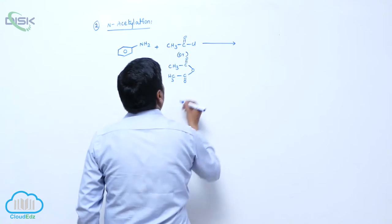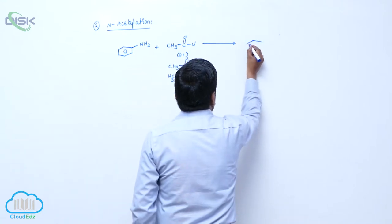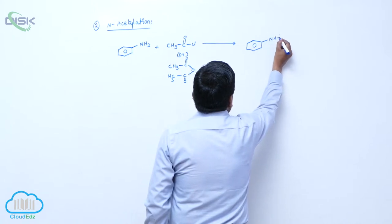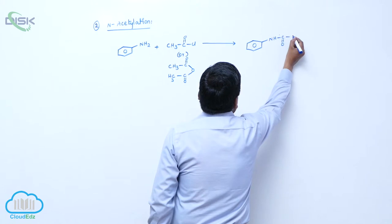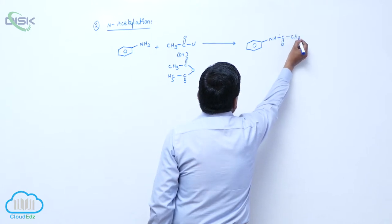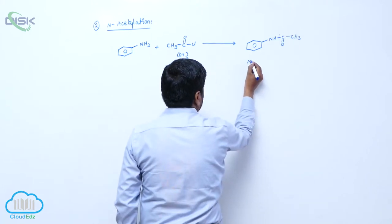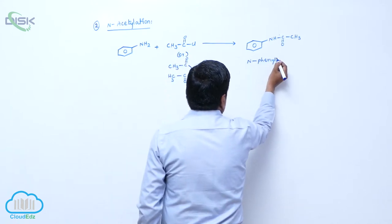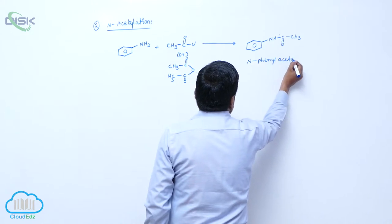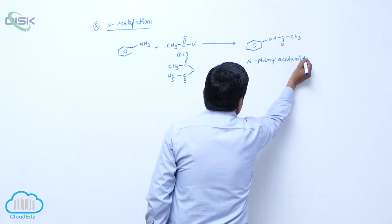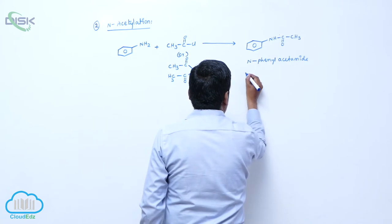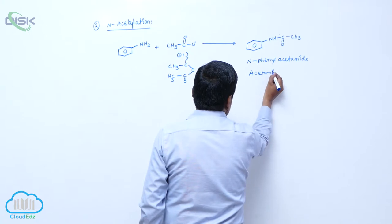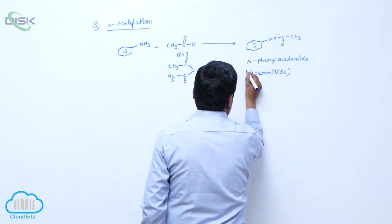Acetyl chloride to form N-phenyl acetamide, N-phenyl ester amide. This is N-phenyl ester amide, commonly known as acetanilide. Commonly known as what? Acetanilide.